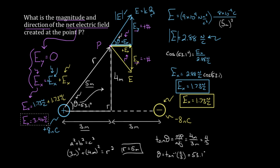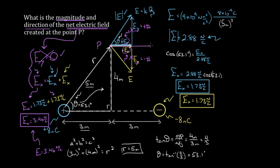So to get the total electric field in the x-direction, we take 1.73 from the positive charge and add 1.73 from the negative charge, giving a horizontal component of 3.46 newtons per coulomb. This is the horizontal component of the net electric field at that point — essentially just one of them times two. Since there was no vertical component of the electric field, the horizontal component equals the magnitude of the total net electric field. The total electric field simply points to the right at 3.46 newtons per coulomb.